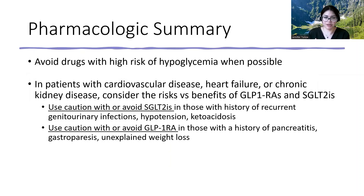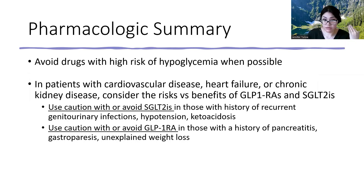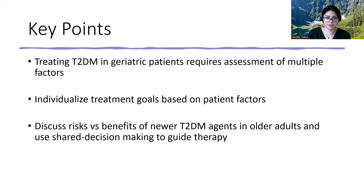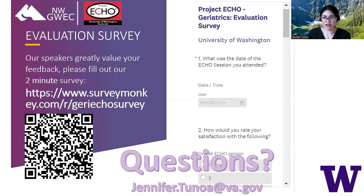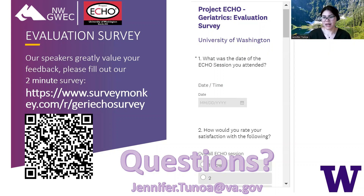In summary: try to avoid drugs with a risk of hypoglycemia if you can. In patients who have cardiovascular disease, heart failure, or CKD, GLP-1s and SGLT2s are great drugs with great benefits, but use with caution or avoid them in specific patient populations. I went over a lot of information on a very big topic, and I hope I can clarify anything if you have any questions.